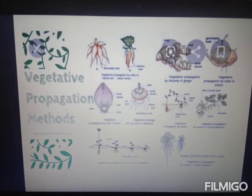Conidia or conidiophores are non-motile, exogenously produced asexual spores seen in fungi. Examples are Penicillium and Aspergillus, which were also studied in biological classification last year.